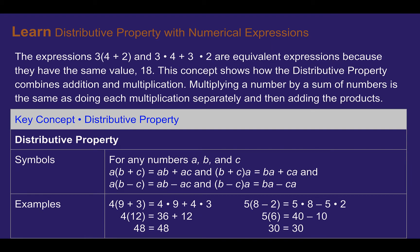Let's learn distributive property with numerical expressions. The expressions 3 times the quantity 4 plus 2, and 3 times 4 plus 3 times 2, are equivalent expressions because they have the same value of 18. This concept shows the distributive property, which combines addition and multiplication. So multiplying a number by a sum of numbers is the same as doing each multiplication separately and then adding their products.